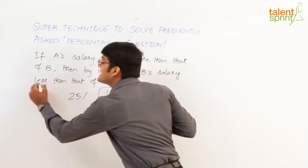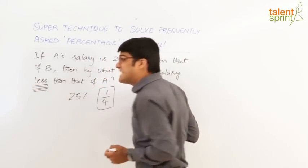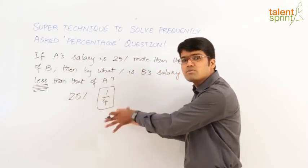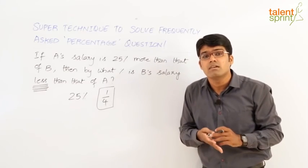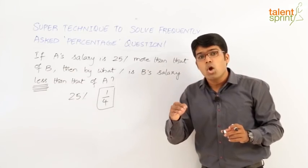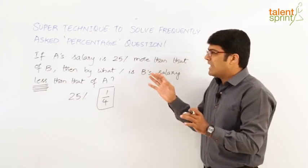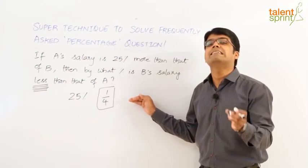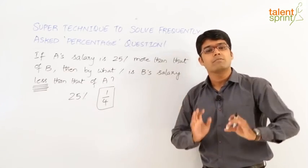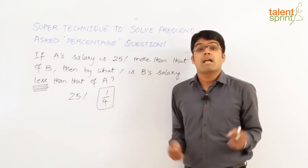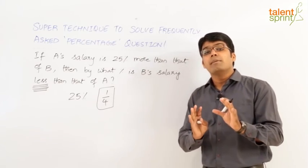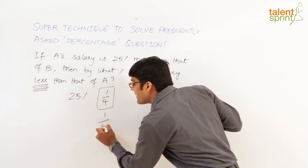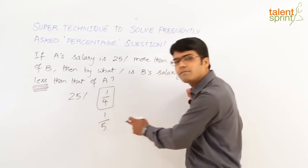By what percentage is B's salary less than that of A? Focus on the keyword: less. We have to find out how much less B's salary is than A's. Since the keyword is 'less', we reduce this fraction. A fraction can be reduced in two ways: either reduce the numerator or increase the denominator. But while answering such questions, we never work on the numerator — we only work on the denominator. So to reduce the fraction, we increase the denominator by an amount equal to the numerator. The numerator is 1, so we increase the denominator by 1: 1/4 becomes 1/5 (4 + 1). That is your answer.